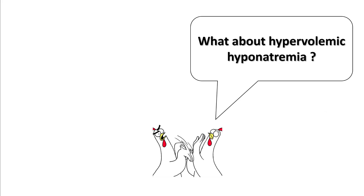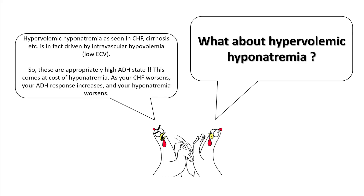One thing you may have noticed is that we did not talk about hypervolemic hyponatremia. Understand that hypervolemic hyponatremia — as seen in heart failure, cirrhosis, and other diseases — is in fact driven by intravascular hypovolemia, that is, low effective circulating volume. These are appropriately high ADH states, and as heart failure worsens, the ADH response increases to hold on to more volume and the hyponatremia worsens.